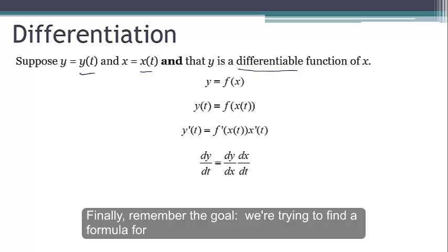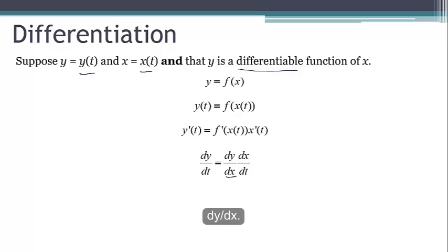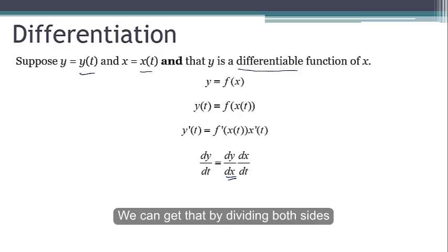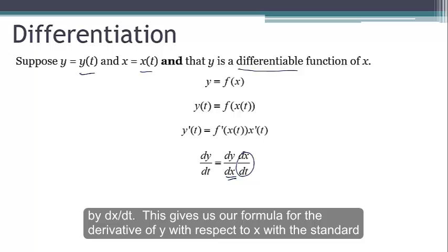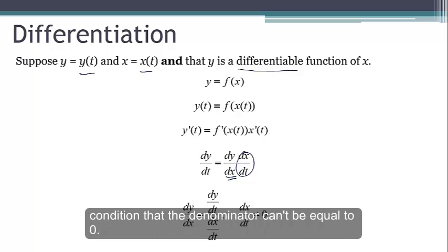Now finally, remember the goal. We're trying to find a formula for dy/dx. So we can get that by dividing both sides by dx/dt. And that gives us our formula for the derivative of y with respect to x, with the standard condition that the denominator can't be equal to zero.